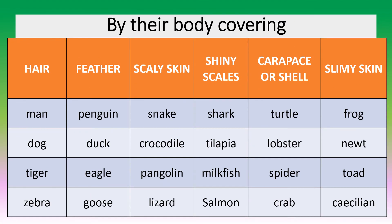Another way of grouping animals is by their body covering. Their body can be covered by hair or feather, scaly skin, shiny scales, carapace or shell, or slimy skin.